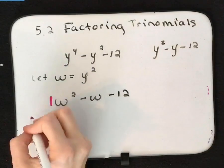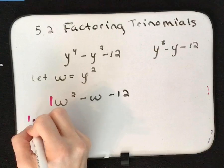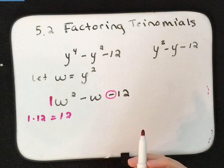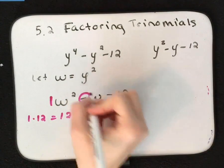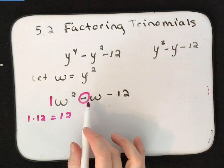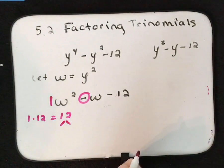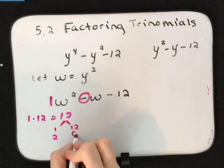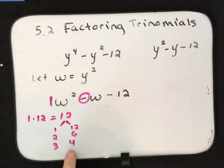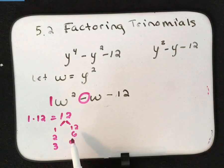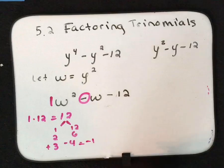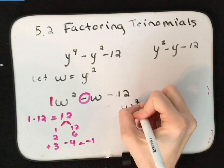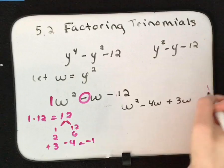Now we use the AC method on w squared minus w minus 12. A times c is 1 times negative 12, giving us 12. We need factors of 12 that add or subtract to negative 1. Factors of 12: 1 and 12, 2 and 6, 3 and 4. Adding and subtracting 1 and 12 won't work, nor will 2 and 6. But positive 3 and negative 4 add to negative 1 — that's our winner. So we rewrite as w squared minus 4w plus 3w minus 12.